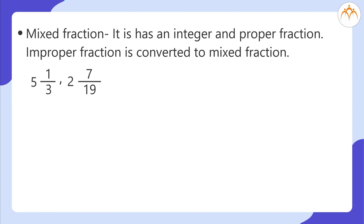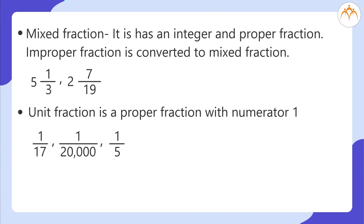Mixed fractions have an integer and a proper fraction — improper fractions are converted to mixed fractions — examples: 5 and 1 third, 2 and 7 nineteenth. Unit fractions are proper fractions with numerator 1 — examples: 1/17, 1/20000, 1/5.